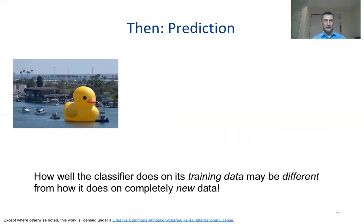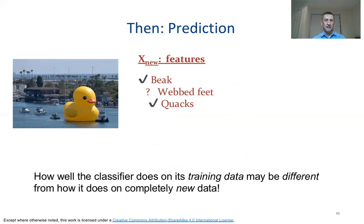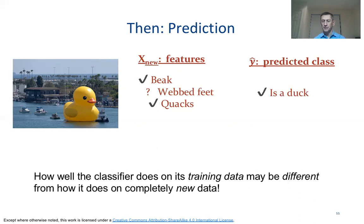In a prediction, we would have a completely new observation data point — like a picture on the left-hand side. From it, we would extract certain features. For example, it has a beak and it quacks, but we can't say whether it has webbed feet or not. Then our model would do a prediction — in this case, a good model was able to predict the right class and recognize that it is a duck. One important thing to pay attention to is that model performance on the training dataset may be quite different from performance on completely new testing data points. We have to be very careful not to build a model that is overfitting.